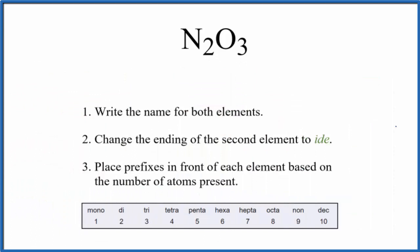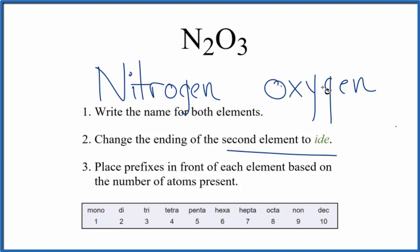So to write the name for N2O3, we use these rules here. First we're going to write the name for both elements. N, that's nitrogen, and then O, that's oxygen. We're going to take the oxygen, the second element, and change the ending to ide.